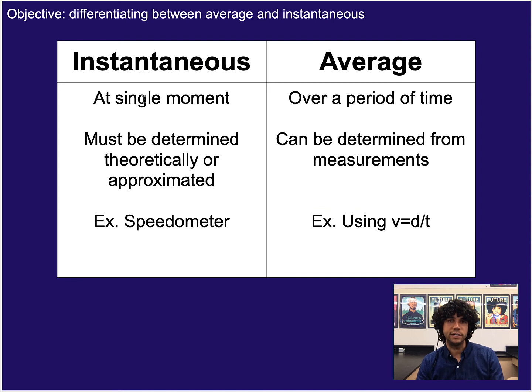Alright, so quick little summary. Instantaneous is a measurement at a single moment, regardless of what type of measurement it is. It must be determined theoretically or approximated. It's not something we can usually actually calculate or sorry, it's not something we can usually measure directly. Even if we think we are, usually there's some sort of averaging going on at a very, very small scale. Some examples of you seeing an instantaneous or nearly instantaneous measurement would be a speedometer.